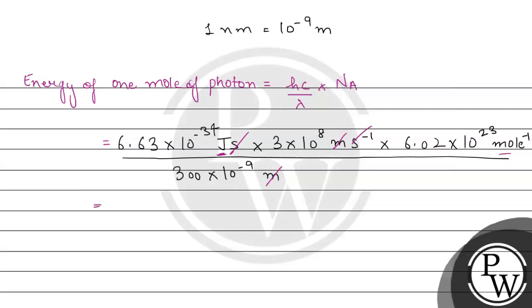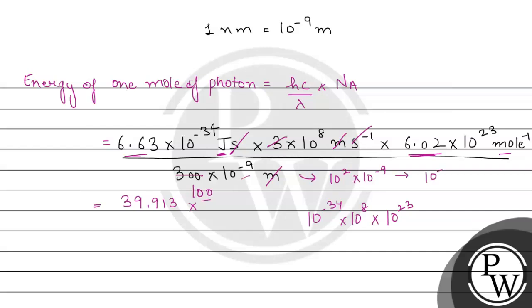Now we cancel three with 300 in the wavelength, and multiply 6.63 by 6.02 to get 39.913. For the powers of 10: the numerator has 10⁻³⁴ × 10⁸ × 10²³, and the denominator has 100 × 10⁻⁹, which equals 10² × 10⁻⁹ = 10⁻⁷.